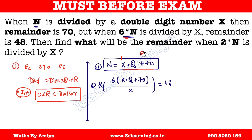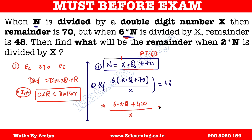Remainder Theorem 1 says we have to divide individually to get the remainder. So we expand: 6 times N equals 6 times X times Q plus 6 times 70, which equals 6XQ plus 420. When this is divided by X, the remainder is 48.